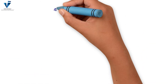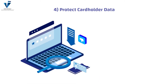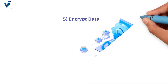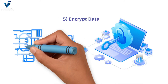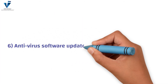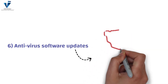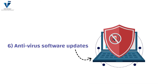The fourth checklist item is to protect cardholder data. This includes implementing strong security measures and procedures like encryption and PAN masking. The fifth item is to encrypt data — ensure that sensitive data in transit is encrypted using strong encryption protocols for both private and public networks. The sixth item is antivirus software updates. Organizations must deploy antivirus software on all hardware and software, especially on personal computers and servers.